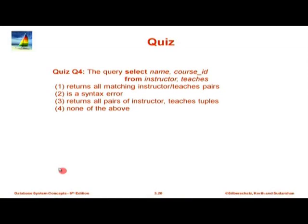Where we left off yesterday - there is a new quiz question. The question asks: the query 'SELECT name, course_id FROM instructor, teacher' matches which of the following. What was probably intended was to find out which instructor teaches which course. But there is no join condition here. As a result, the query returns all pairs of instructor and teacher tuples, which is not what was probably intended.